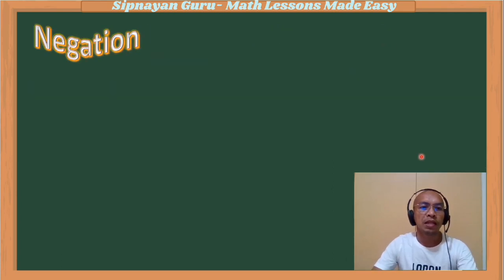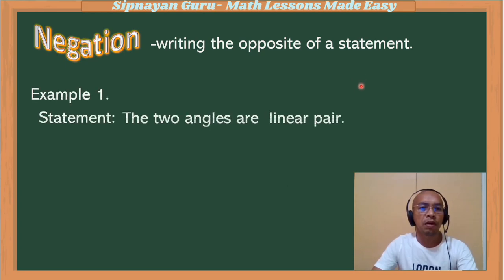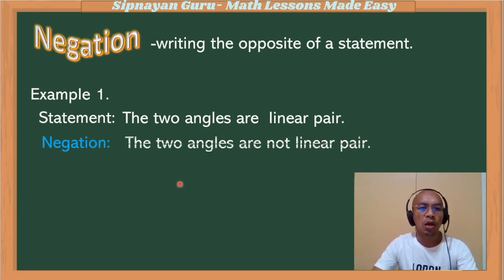Now, what is a negation? Negation is writing the opposite of the statement. So for example, two angles are a linear pair — our negation would be: two angles are not a linear pair.